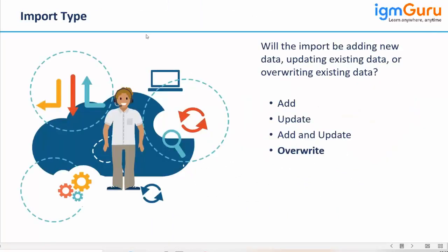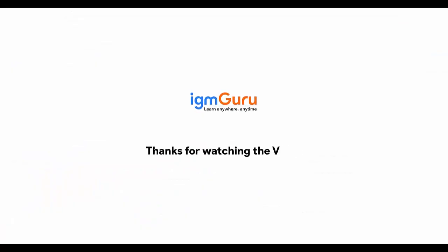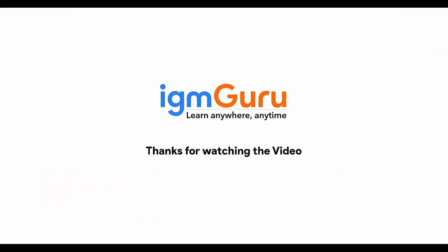And if you talk about the data extension, in a data extension you have four kinds of import: add, update, add and update, and overwrite. Understood? Yes sir. Thanks for watching the video. For the full course please visit www.igmguru.com and enroll today.